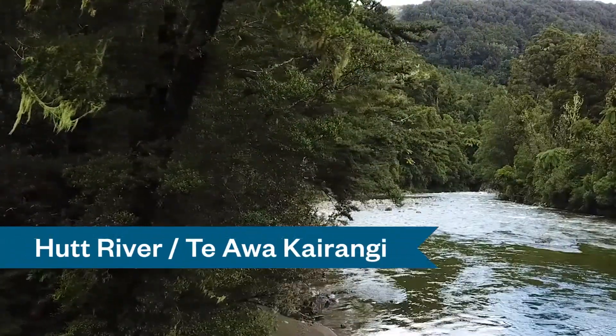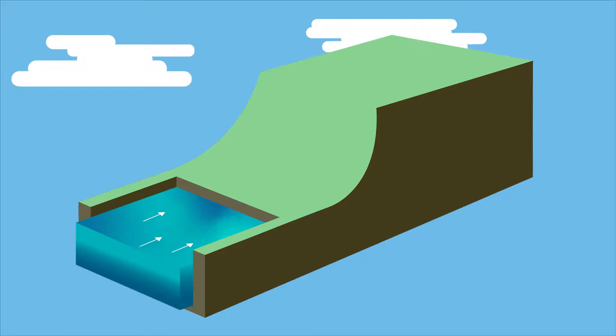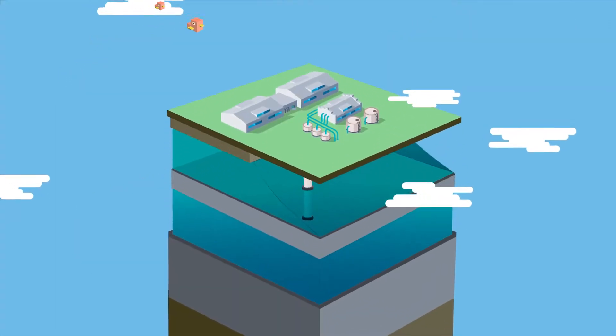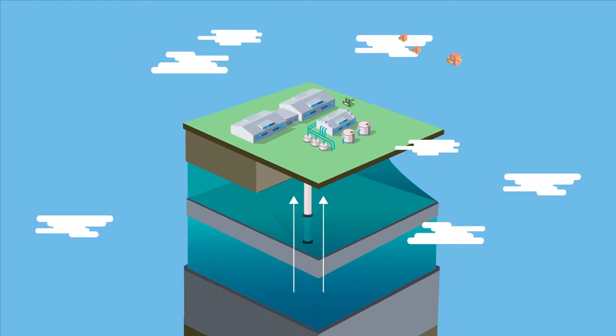Water from the Hutt River, Te Awokairangi, starts to flow underground near the Taita Gorge and becomes naturally pressurized beneath a layer of hard clay. The water is filtered naturally over time and is then extracted using a series of wells. It is then carefully treated at either the Waterloo or Gear Island treatment plants.